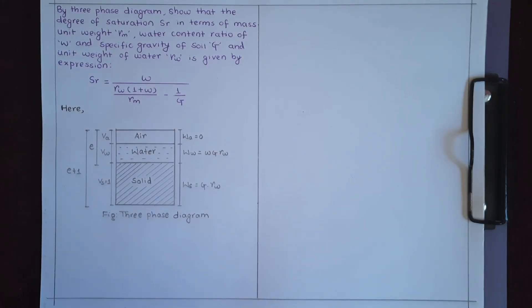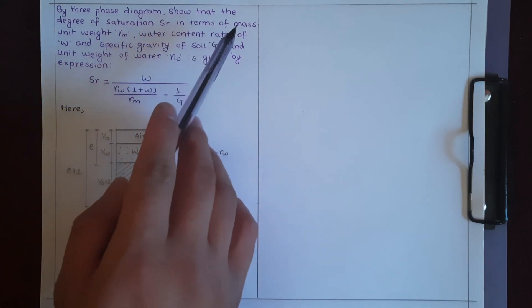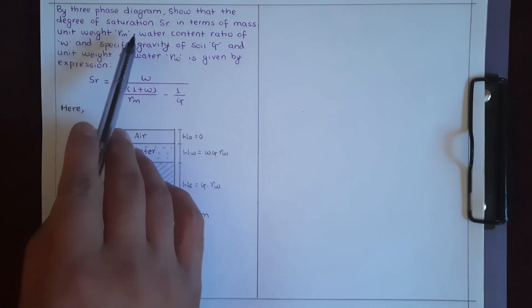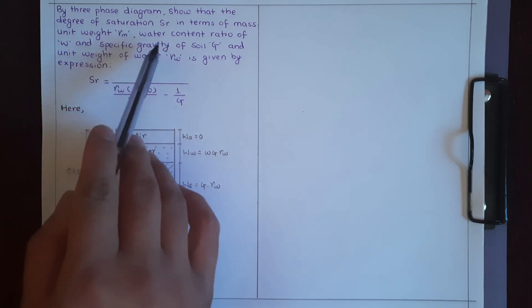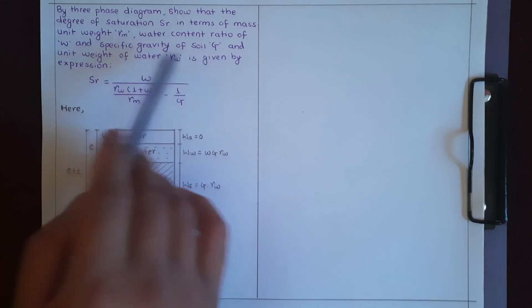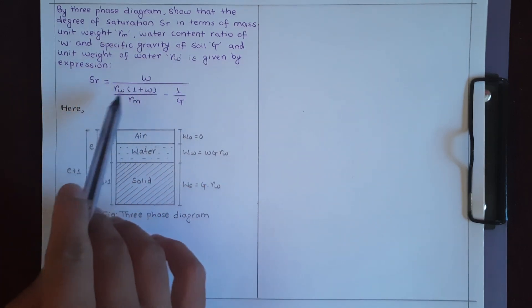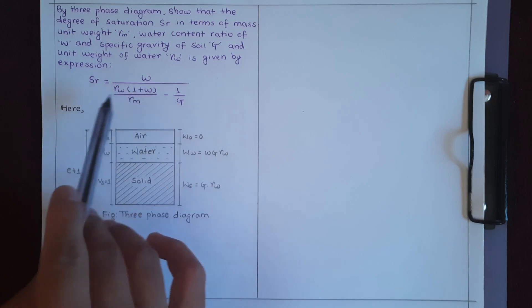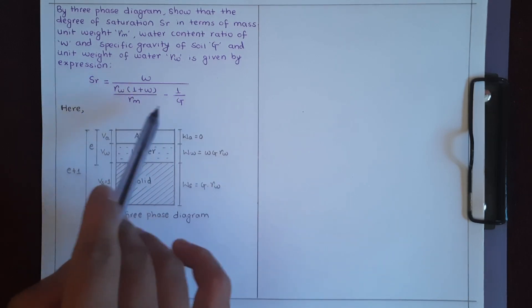By three-phase diagram, the degree of saturation Sr in terms of mass unit weight gamma_m, water content ratio w, specific gravity G, and unit weight of water gamma_w is given by the expression: Sr equals w divided by [gamma_w times (1 plus w divided by gamma_m) minus 1 divided by G].